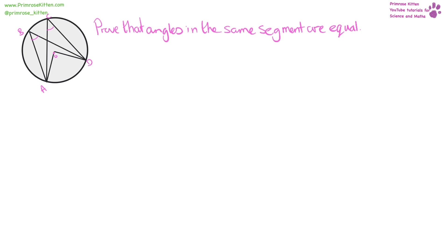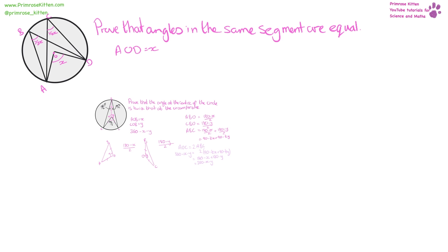Here we're going to prove that the angles in the same segment are equal. We call this angle in here X, so angle AOD equals X. If the angle at the center of the circle is X, it means each of the angles at the circumference has to be half of that — because we've proved this earlier.